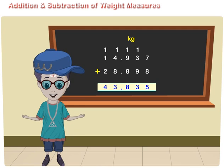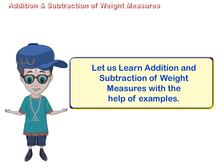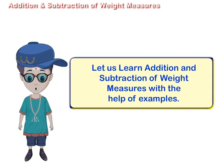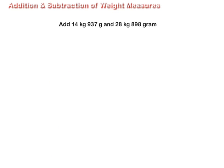Addition and subtraction of weight measures. Let us learn addition and subtraction of weight measures with the help of examples. Add 14 kg 937 grams and 28 kg 898 grams. First, convert grams into kilograms: 14 kg 937 grams is equal to 14.937 kilograms and 28 kg 898 grams is equal to 28.898 kilograms.